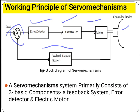The servomechanism system primarily consists of three basic components: one is a feedback system, second one is an error detector, and third one is an electric motor. If you would like to rotate an object by 180 degrees, suppose we give a target of 180 degrees, this signal goes through the error detector, through the controller — which can be an Arduino, microcontroller, or PWM techniques. After that, the signal goes through the motor and finally the output is obtained at the shaft of the motor.